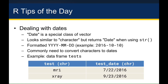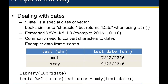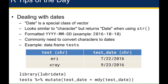R makes it pretty easy to convert character variables into dates. The recommended package for doing that is the lubridate package. If you've got the lubridate package, you can library it in. Then you'll run: tests %>% mutate(test_date = mdy(test_date)). The lubridate package comes with tidyverse so you don't have to install it, but you do have to library it in separately. The mdy function tells R that you expect the data to be in month, day, year order, which is how the data appeared in that data frame.